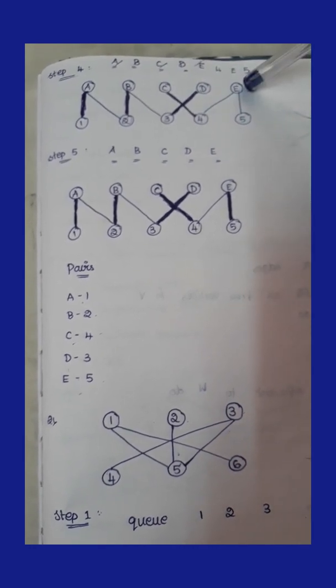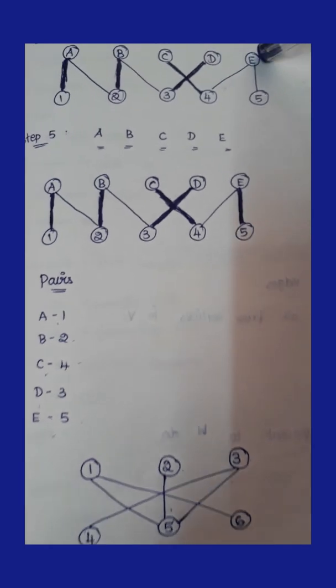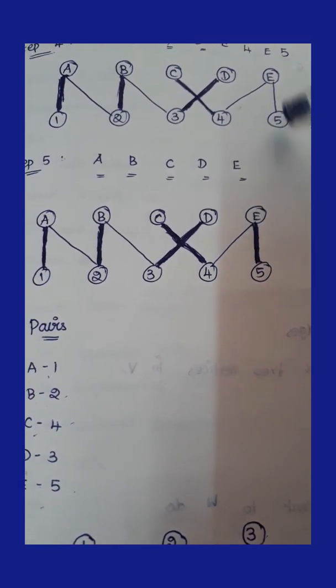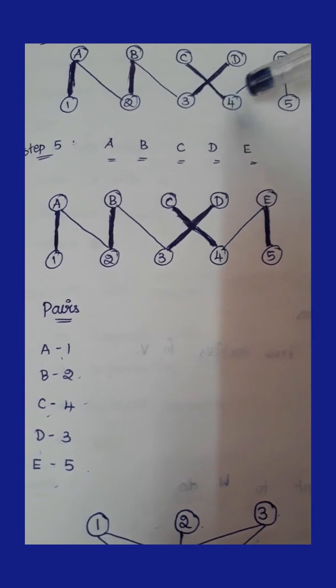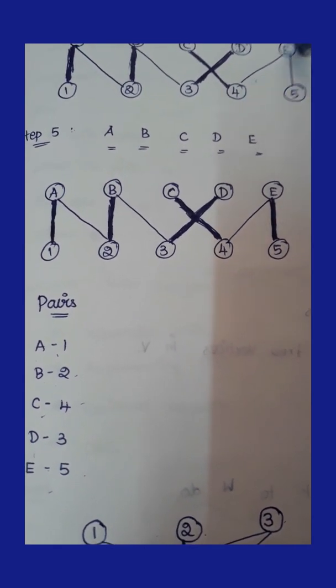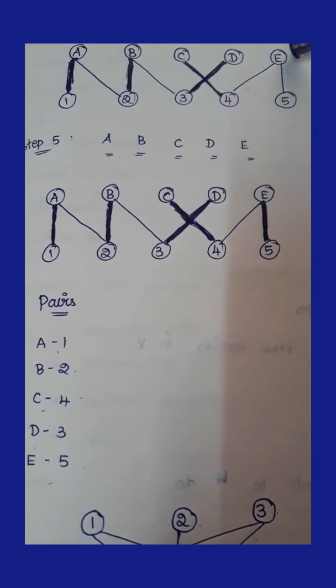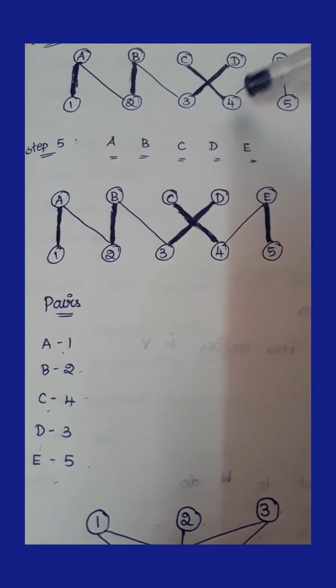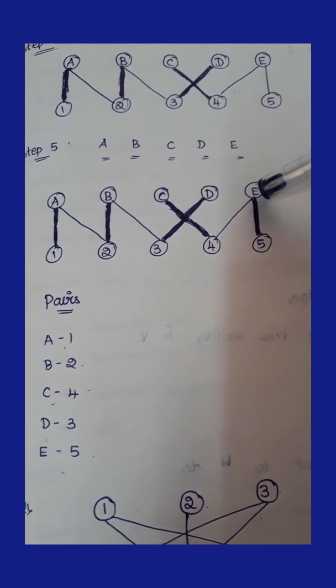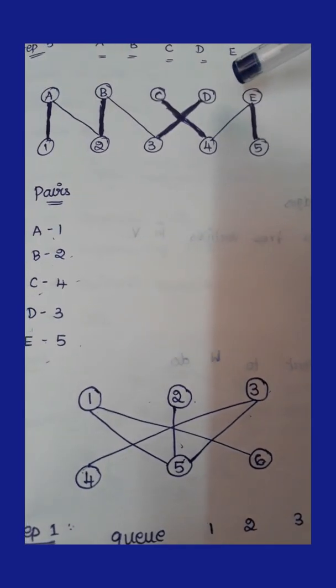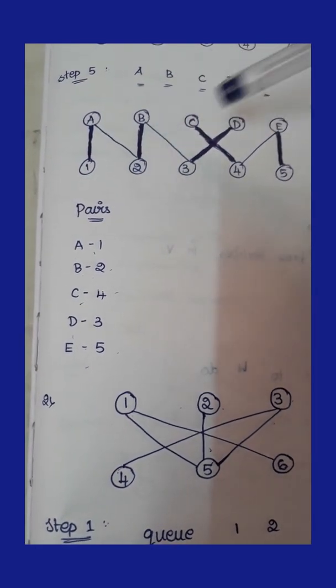The next vertex to visit is E. We have now visited A, B, C, and D in the queue. We check the connectivity for E — E is connected with 4 and E is connected with 5. We check whether the connected edges already have pairs: 4 is already paired with C, so we ignore the edge between 4 and E. The only remaining edge is between E and 5. So E is perfectly matched with 5, and the shaded line is placed over E and 5. All shaded lines in the graph represent the perfect matches.